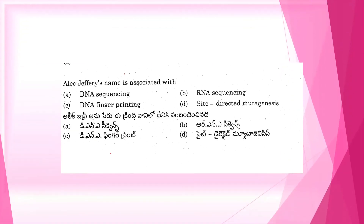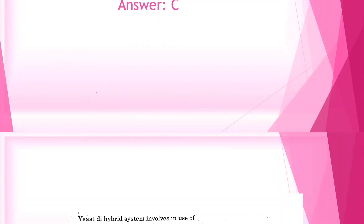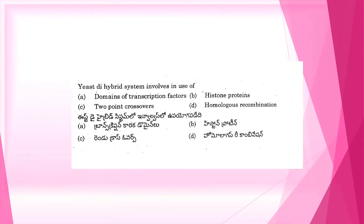Next question. Alec Jeffreys' name is associated with: A. DNA sequencing. B. RNA sequencing. C. DNA fingerprinting. D. Site-directed mutagenesis. Another memory based question. The correct option is C, that is DNA fingerprinting.